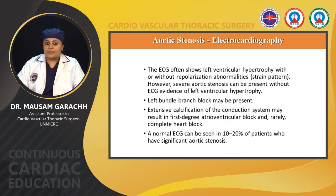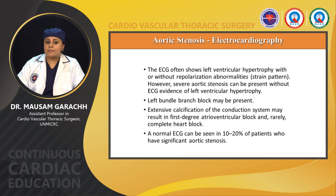Electrocardiography: the ECG often shows left ventricular hypertrophy with or without repolarization abnormalities, i.e., strain pattern. However, severe aortic stenosis can be present without ECG evidence of LVH. Left bundle branch block may be present. Extensive calcification of the conduction system may result in first-degree AV block and rarely complete heart block. A normal ECG can be seen in about 10–20% of patients with significant aortic stenosis.